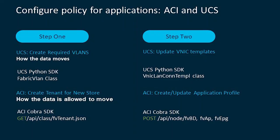For UCS we're going to use the Python SDK, creating VLANs, and we're also creating the new tenant in ACI using the ACI SDK. After those are created, we get the connectivity going by updating the VNIC templates and setting up the application profiles and endpoint groups, again using the ACI SDK.